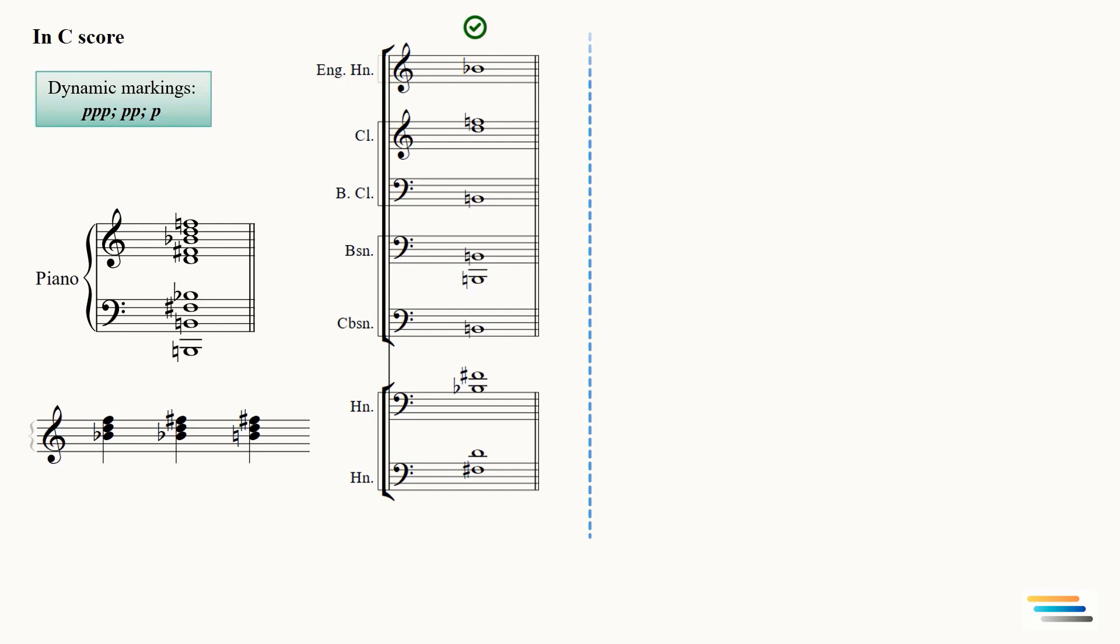At strong dynamics, the high woodwinds should be doubled, as there are four horns in the chord. So the low woodwinds remain unchanged as they have already doubled.